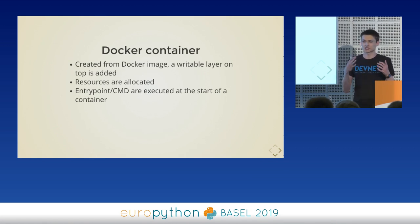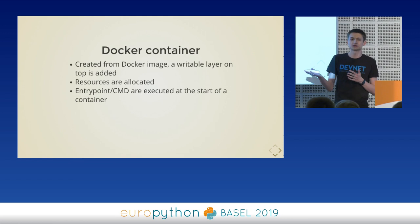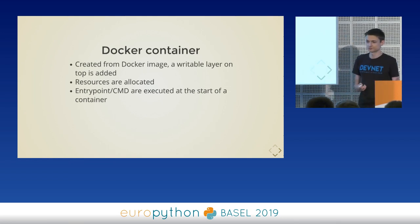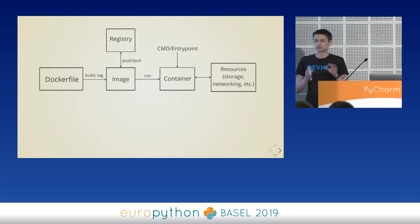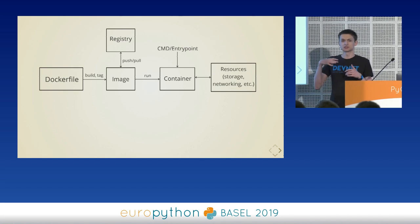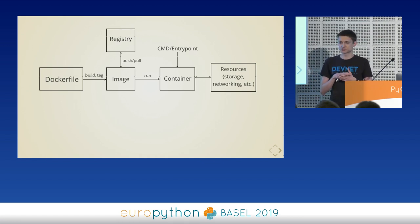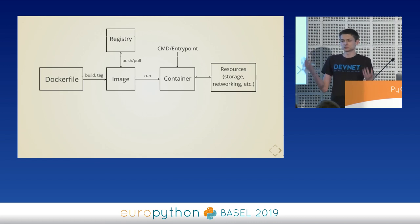A Docker container is created from a Docker image. We add a writable layer on top, allocate resources, and when we start the container, we execute the entrypoint and CMD commands. The last concept is registry: it's a place where we store and share tagged images. Here is a simple diagram to summarize: we have a Dockerfile, we use Docker build to build an image, Docker tag to change the tag, push and pull to the registry, and Docker run to create a container.